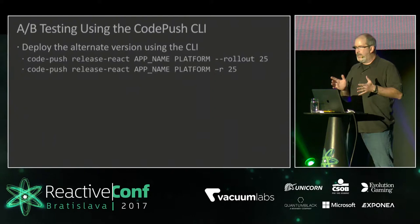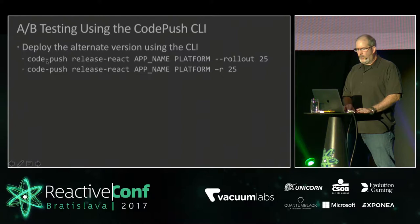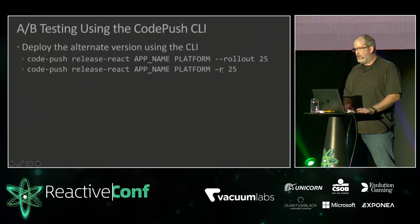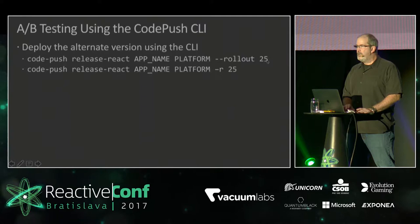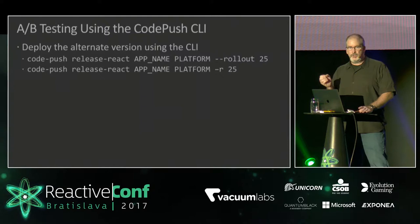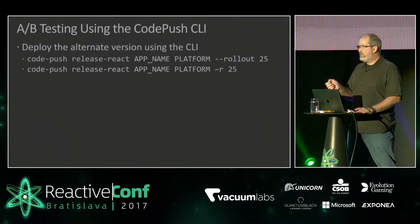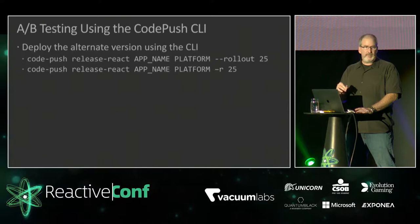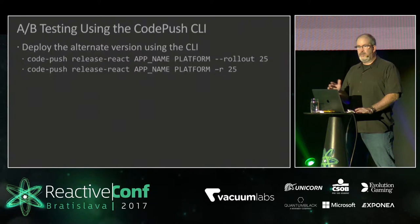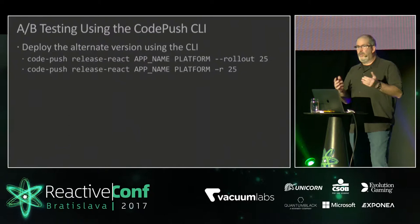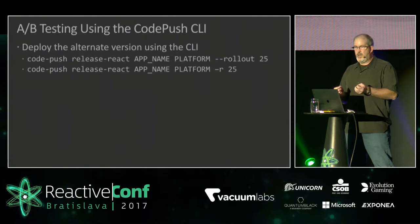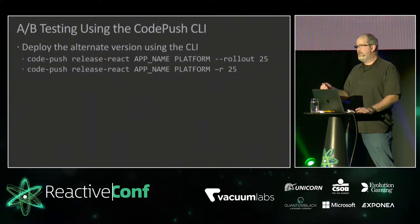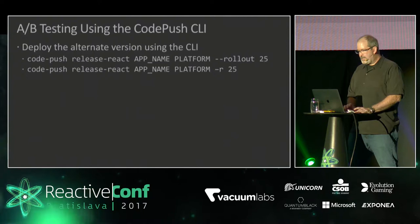CodePush has some capabilities you can use for A/B testing through the CLI. When you deploy an application update, you can use the `--rollout` flag and specify a numeric percentage. CodePush will automatically deploy your update to that percentage of the user population. If you have a major change, you deploy it to CodePush with this parameter, CodePush deploys it to just a percentage of your users, and then you use analytics to track usage and decide whether that version is good enough. If it is, you roll it out to the rest; if not, you roll it back.